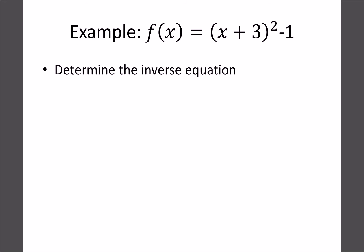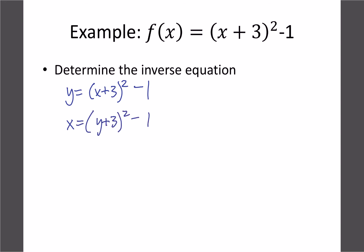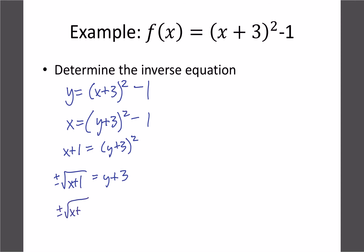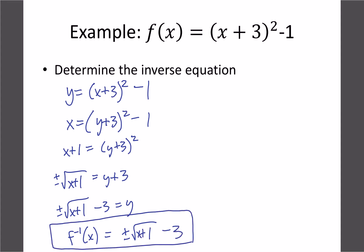Let's do a full example. Our original is f(x) = (x + 3)² − 1. Step one: write y = (x + 3)² − 1. Step two: trade x and y, giving x = (y + 3)² − 1. Step three: solve for y — bring the 1 over, then square root both sides, remembering ±. So √(x + 1) = ±(y + 3), then subtract 3. Our inverse is f⁻¹(x) = ±√(x + 1) − 3.